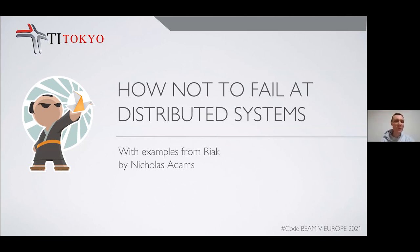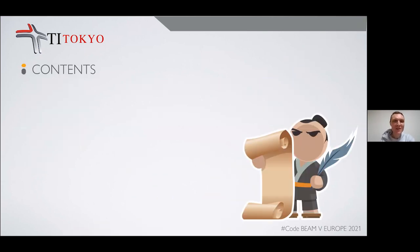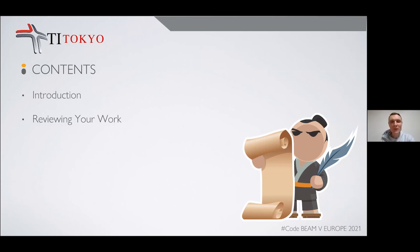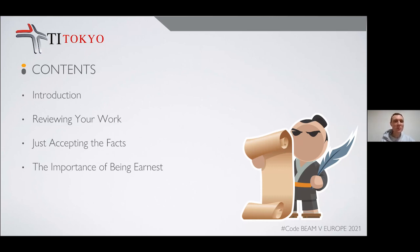So without further ado, let's have a look at how not to fail at distributed systems with examples from Riak, part two. In today's talk, we're going to go through an introduction, a talk about reviewing your work, a section called 'Just Accepting the Facts', the importance of being earnest, and then wrap up with a brief Q&A. The talk itself will be approximately 20 minutes long, so sit back, enjoy, and listen tight.